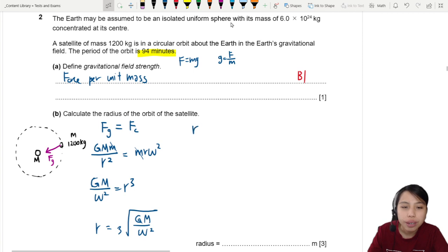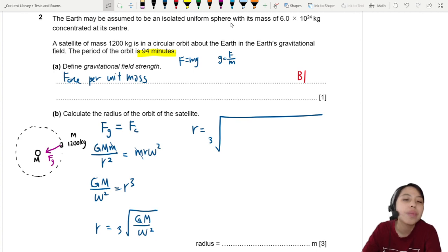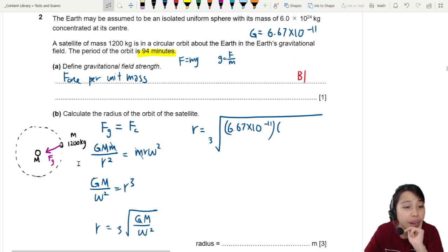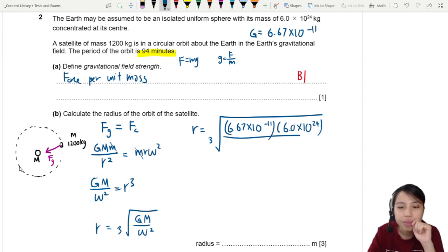Let's plug in the values. R equals cube root of G is a constant. Got to remember the constant G, it's in the first page of every data formula sheet. That's 6.67 times 10 to the negative 11. Mass of the... This M is which M? Big M is the one in the middle. So here we're going to write the mass of the Earth: 6.0 times 10 to the 24.